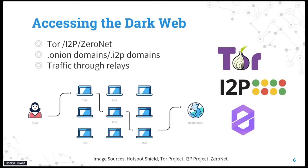Entry nodes are publicly listed and their IP addresses can be found on the clear web, but middle and exit nodes are not. The 'onion' analogy reflects that traffic is encrypted in layers — each node can only see its previous and next node, nothing beyond that. So the entry node doesn't know the exit node's location, and Alice's IP address is hidden from all nodes.